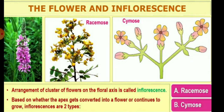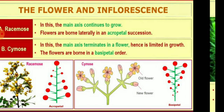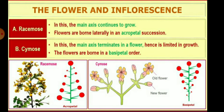The arrangement of the cluster of flowers on the floral axis is called the inflorescence. It is based on whether the apex gets converted into a flower or continues to grow, and it is mainly of two types. First is racemose and second is cymose. In racemose, the main axis continues to grow and the flowers are borne laterally in acropetal succession. In cymose, the main axis terminates in a flower and hence is limited in growth, so that the flowers are borne in basipetal order.